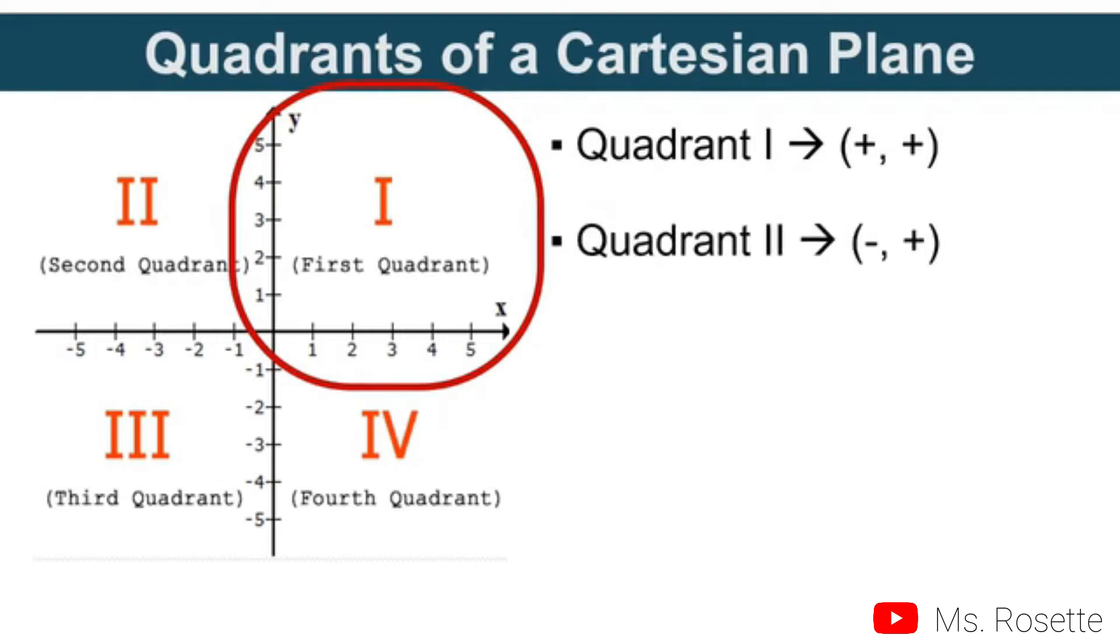In quadrant 2, this part, we have negative, positive. The value of x is negative from the horizontal line, and the value of y is positive, as you can see in our figure.